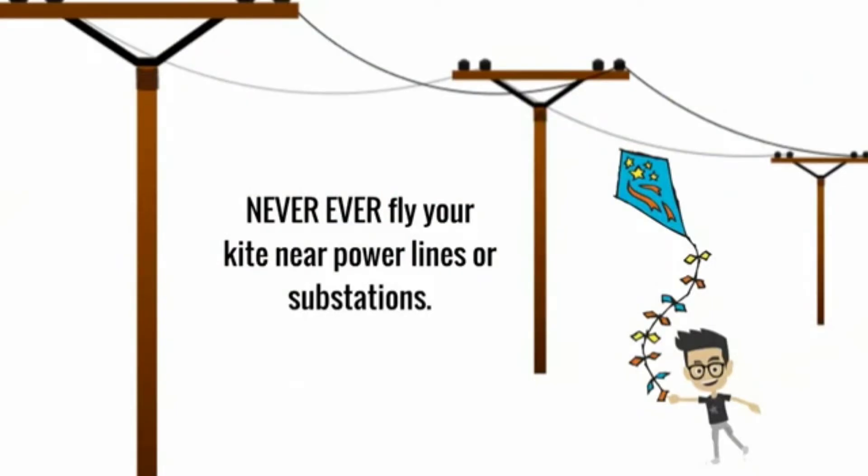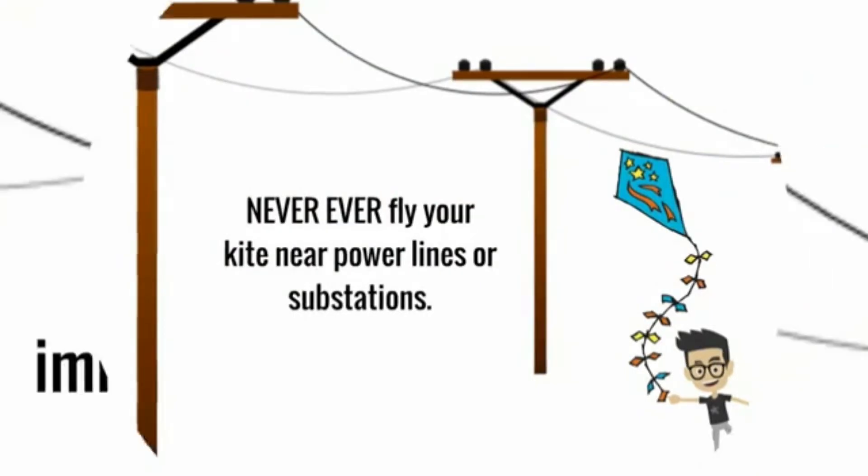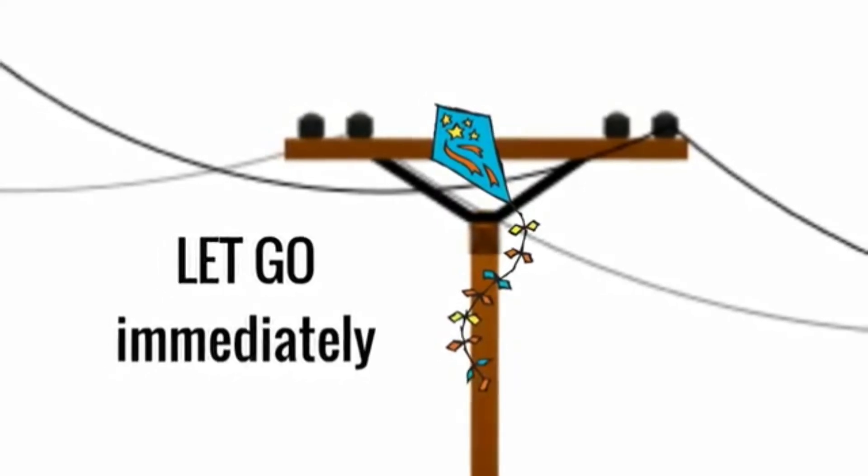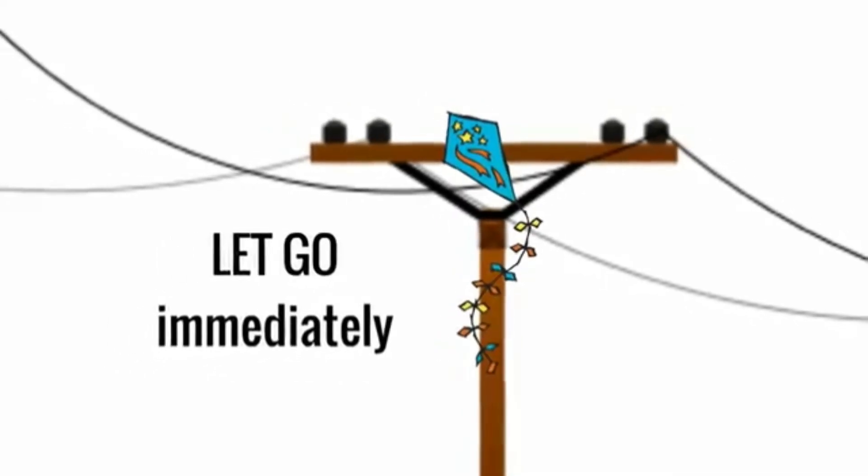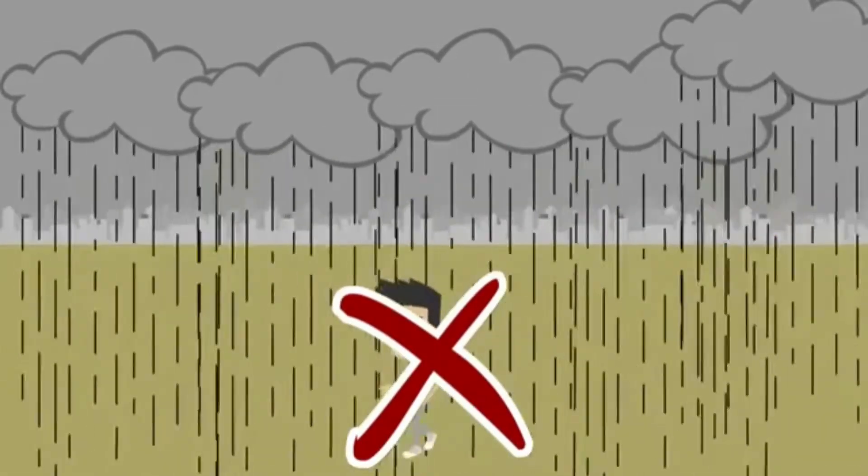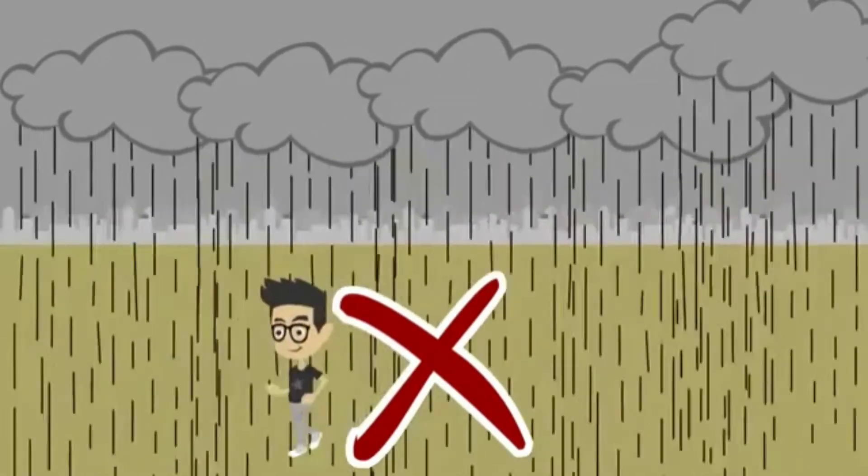Never ever fly your kite near power lines or substations. If your kite gets caught on a power line, let go immediately. Never try to get it back and ask an adult for help. Never fly toys or play in a storm, as wet strings conduct electricity and lightning can strike too.